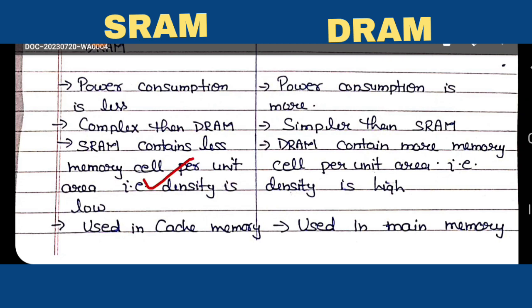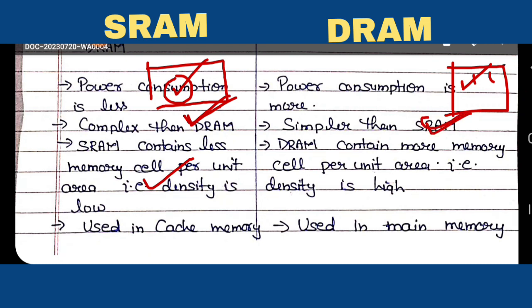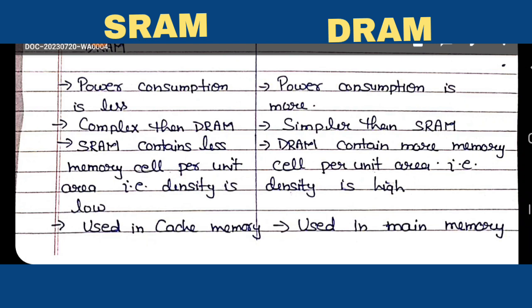If you have the same area, SRAM uses six transistors per bit while DRAM uses only one capacitor and one transistor per cell. That is why SRAM is less dense and DRAM is more dense. The number of cells per area is reduced in SRAM because one SRAM cell covers a larger area, giving it low density, while DRAM has high density.